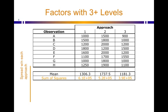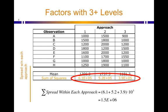Now one of the things that we'll do within analysis of variance is take all three of these and add them up. So the total spread within each approach is just adding all these up, and that turns out to be 1.5 times 10 to the 6.